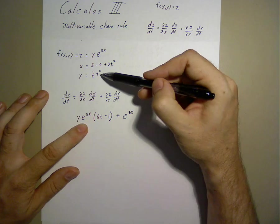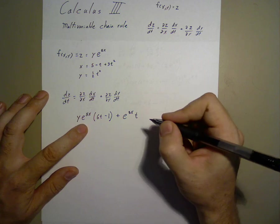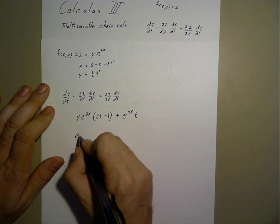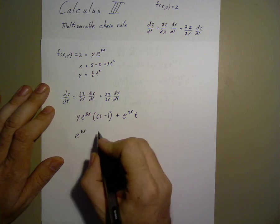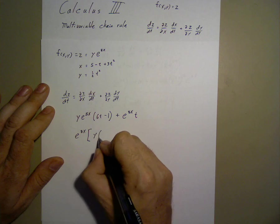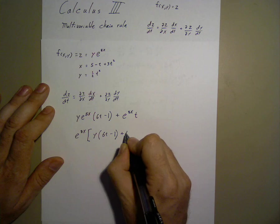Now, the time derivative of y is simply t. We can simplify this as e to the 8x y times 6t minus 1 plus t.